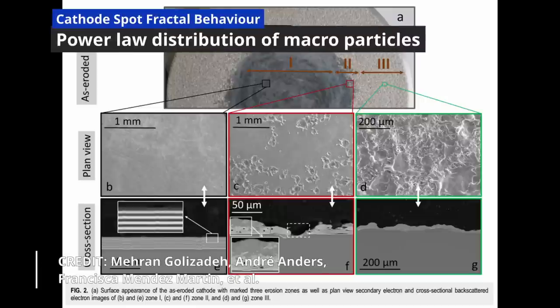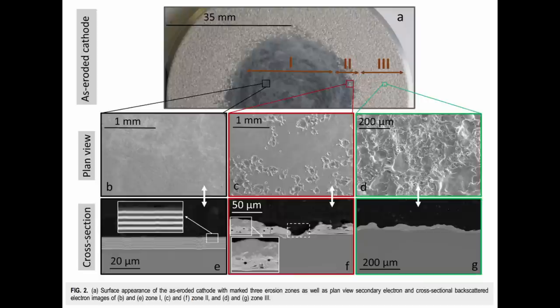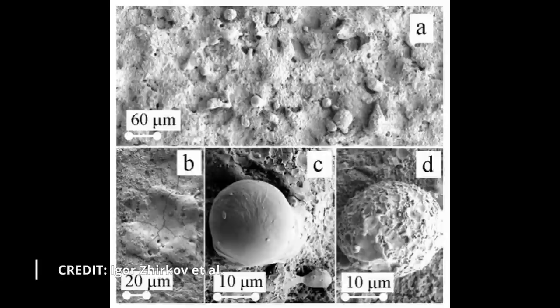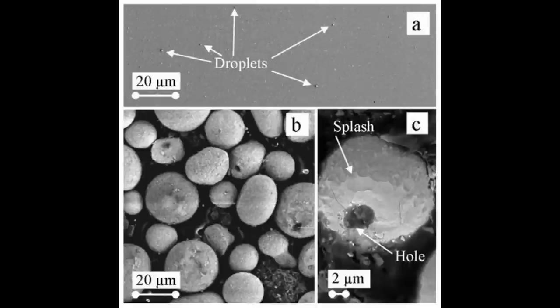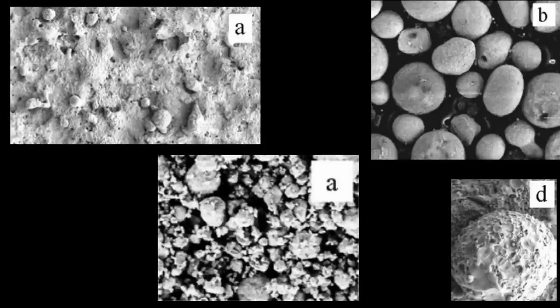Regarding the power law distribution of macroparticles: in the explosive formation of plasma, craters are formed, which have become a signature of cathode arcs. Closely related is the formation of droplets referred to as microparticles. It is well known that smaller microparticles are much more frequent than larger ones. Studies confirm the power law of size distribution and indicate that a fractal dimension may be defined. An observer looking at an electron microscope photograph of microparticles would be unable to decide which magnification was used.